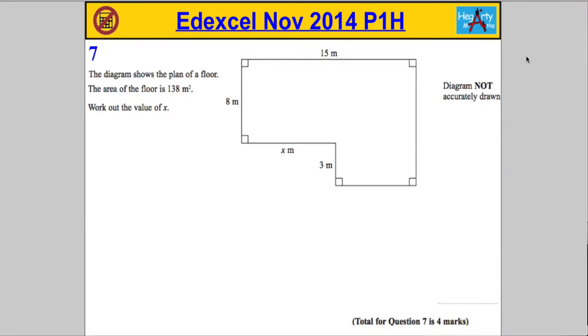Question 7. The diagram shows the plan of a floor. The area of the floor is 138 meters squared and we're asked to work out the value of x.